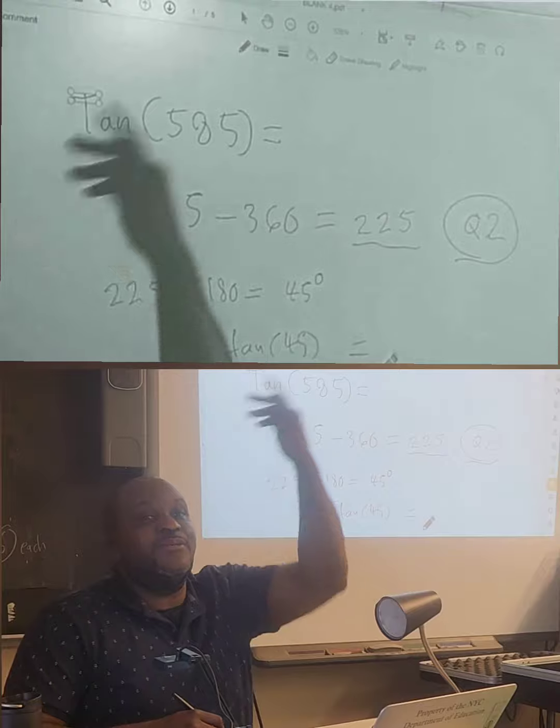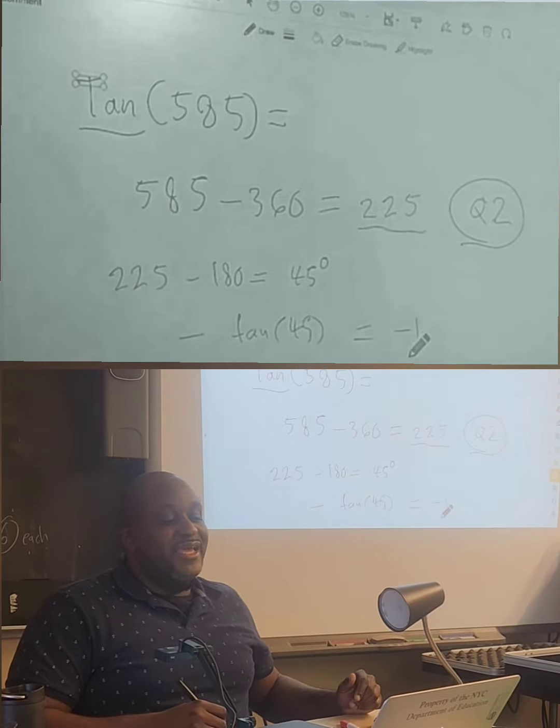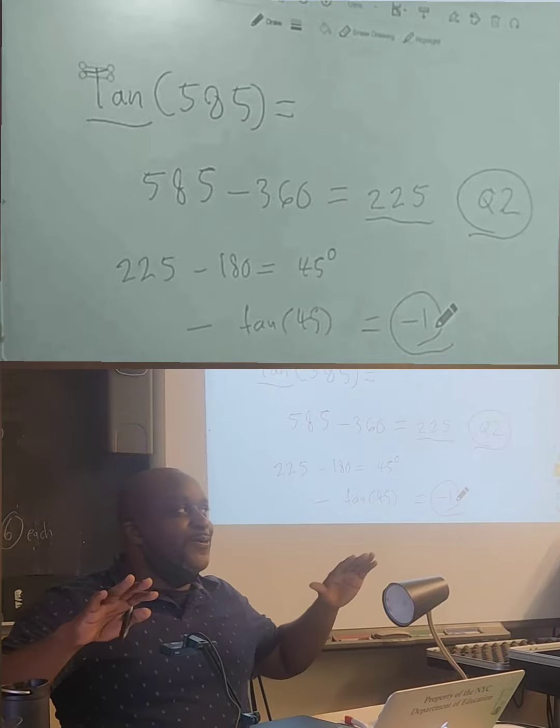What's the final answer? Tan of 45 is? One. Negative 1's the answer, and we having fun, and we out. All right.